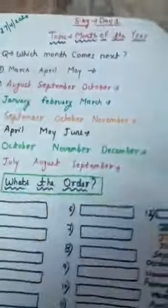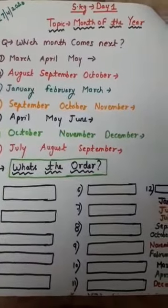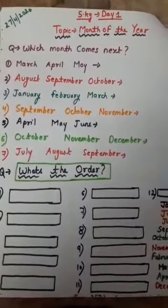Hello kids, good morning, hope you all may be fine. Today it is Monday and the date is 27 April 2020. Let's start today's work. Today's activity is the topic: Months of the Year.